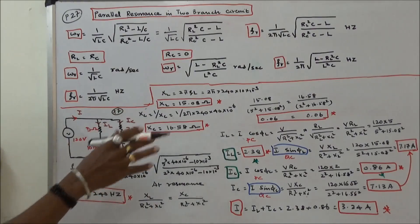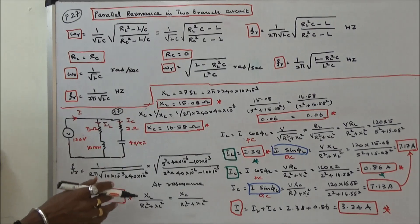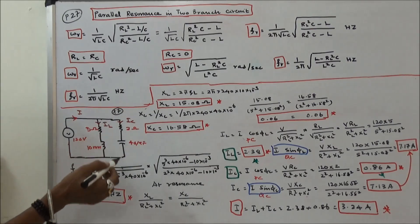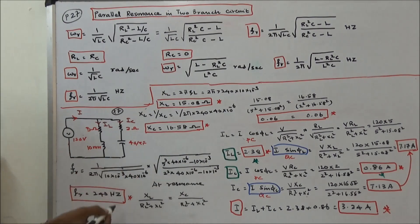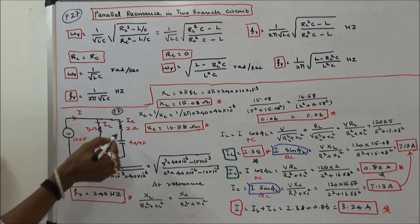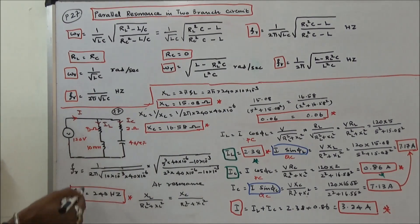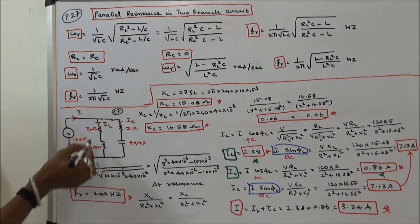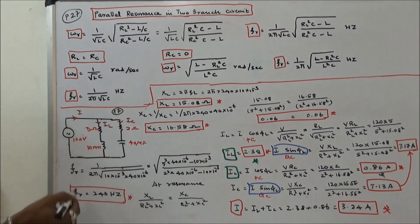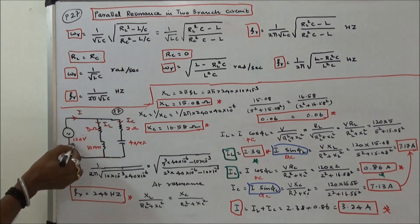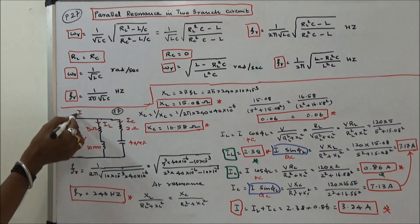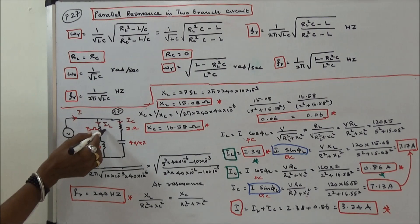Let us see one or two problems on parallel resonance in two branches. The first problem: a 40 microfarad capacitor with resistance 2 ohms, and a 10 mH inductor with resistance 5 ohms, both connected in parallel. The supply voltage is 120 volts. The question is: calculate the resonant frequency, supply current I, I_L and I_C.